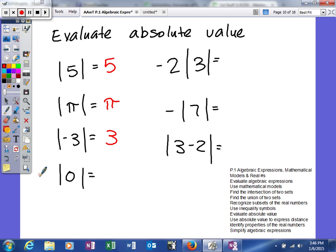The distance from zero that zero is is zero. So the absolute value of zero is zero. Now we're getting into a little bit of some operations.